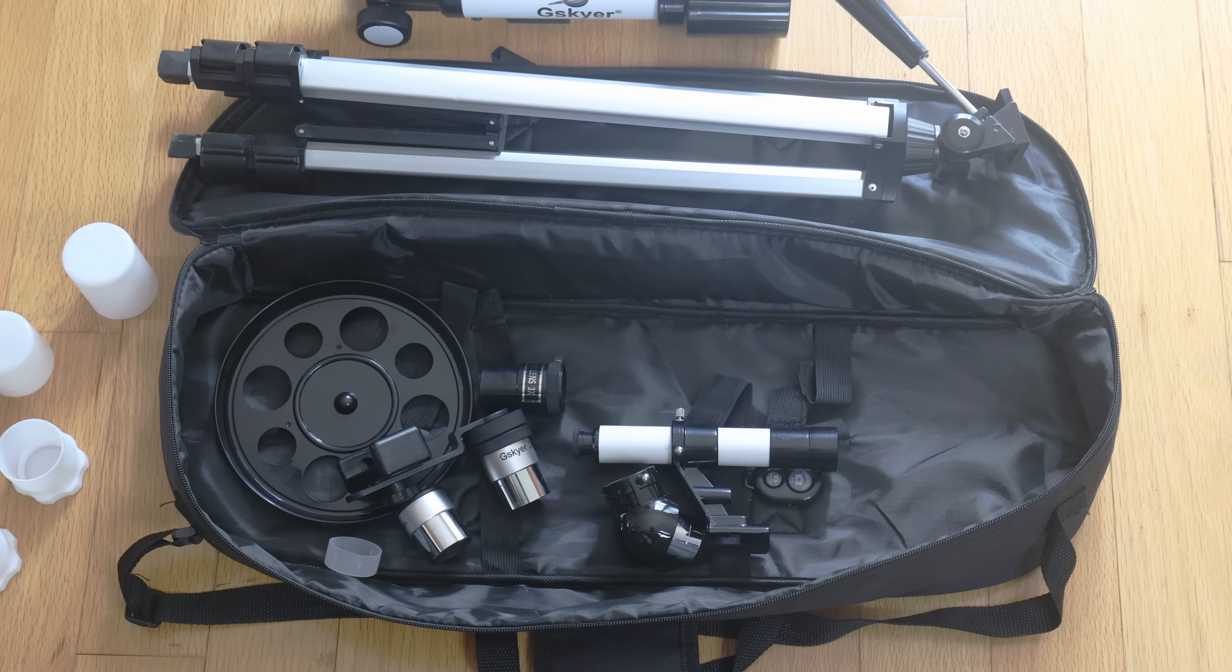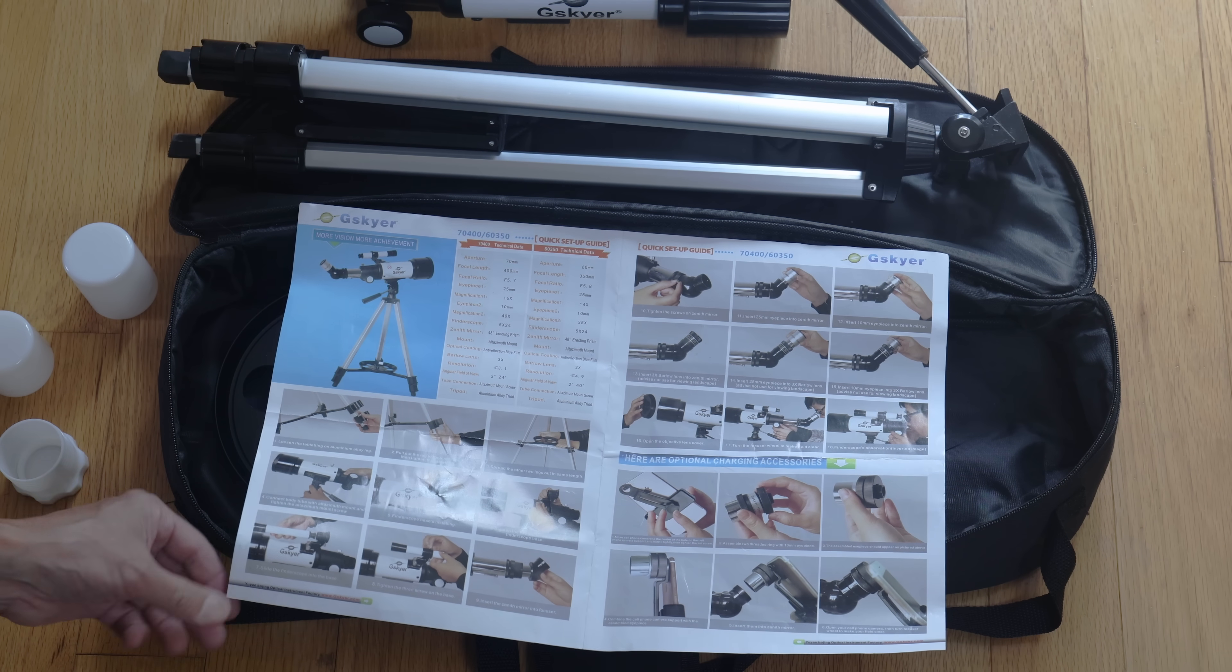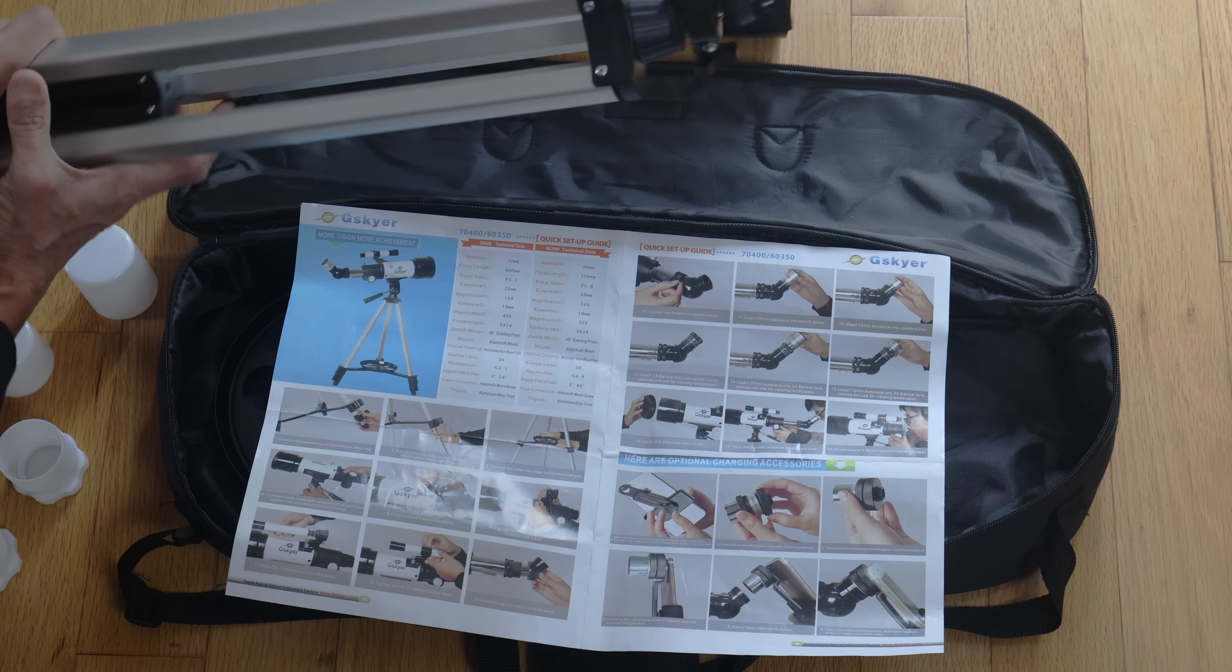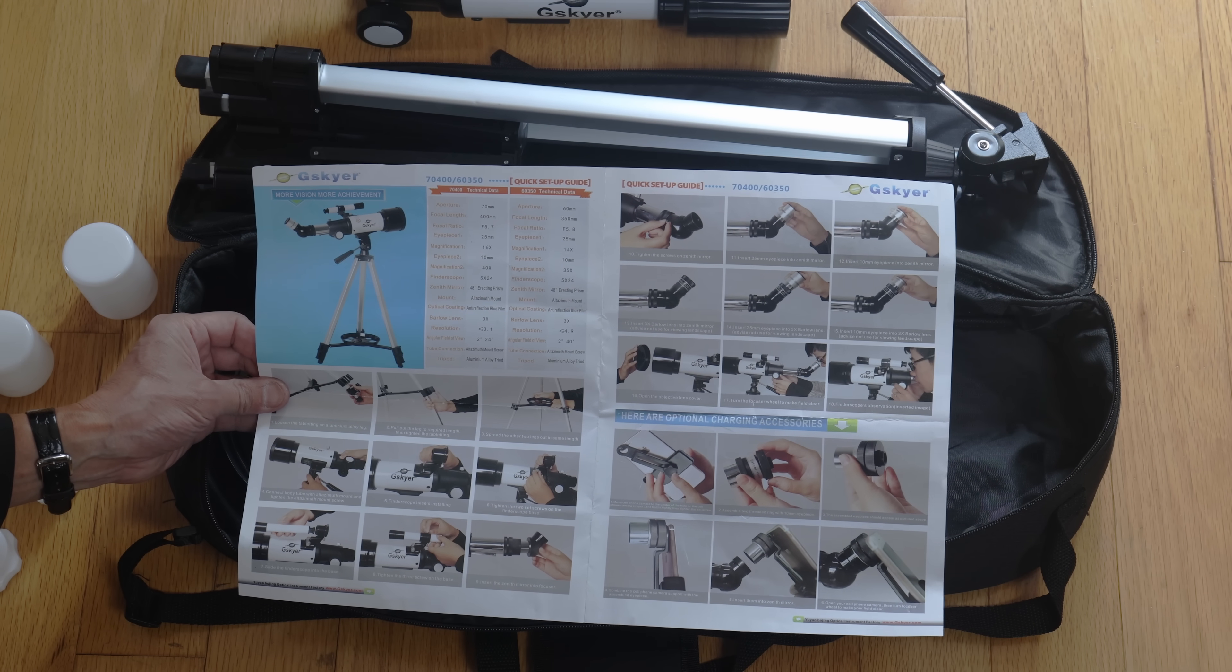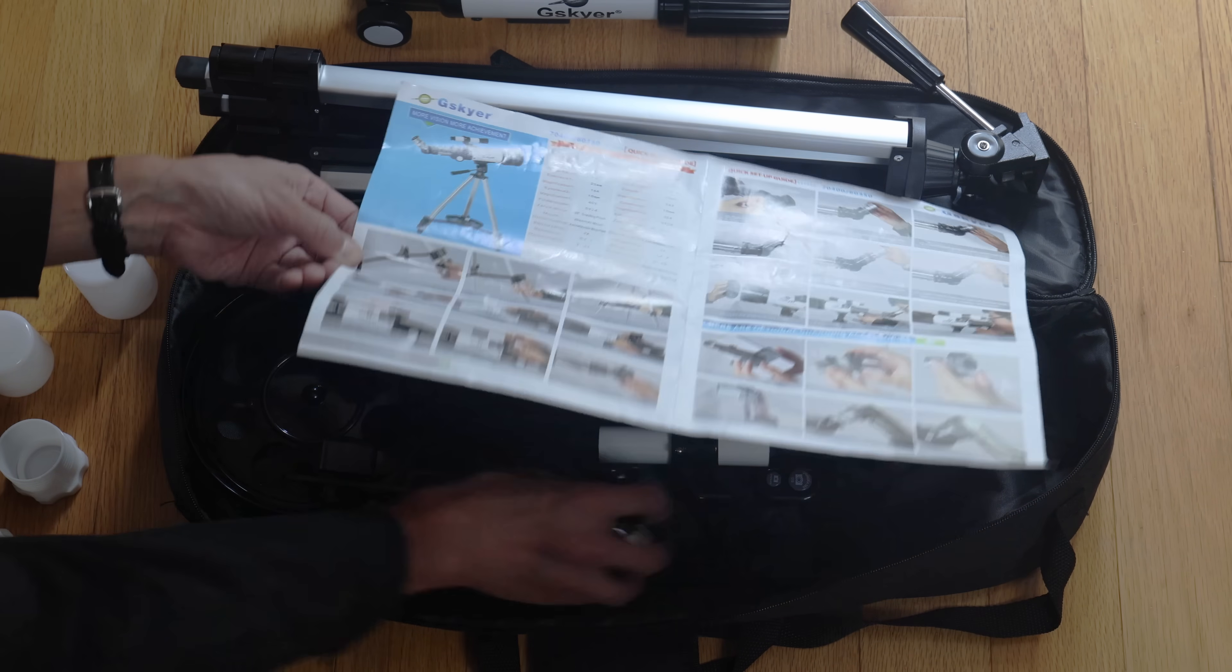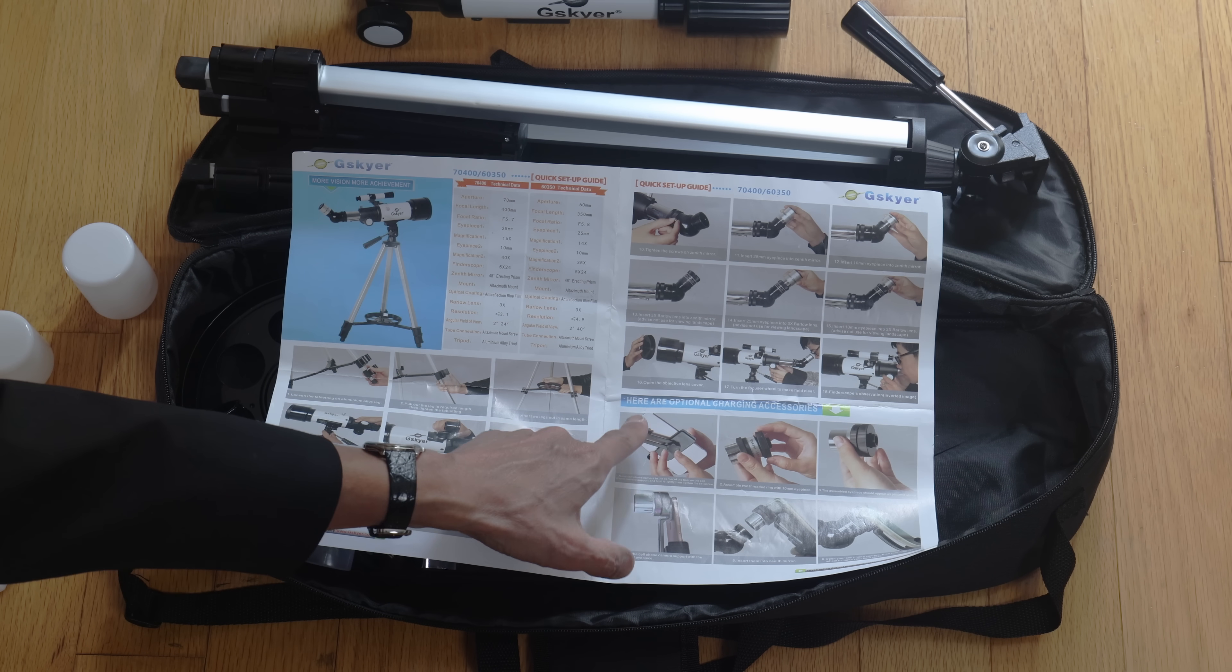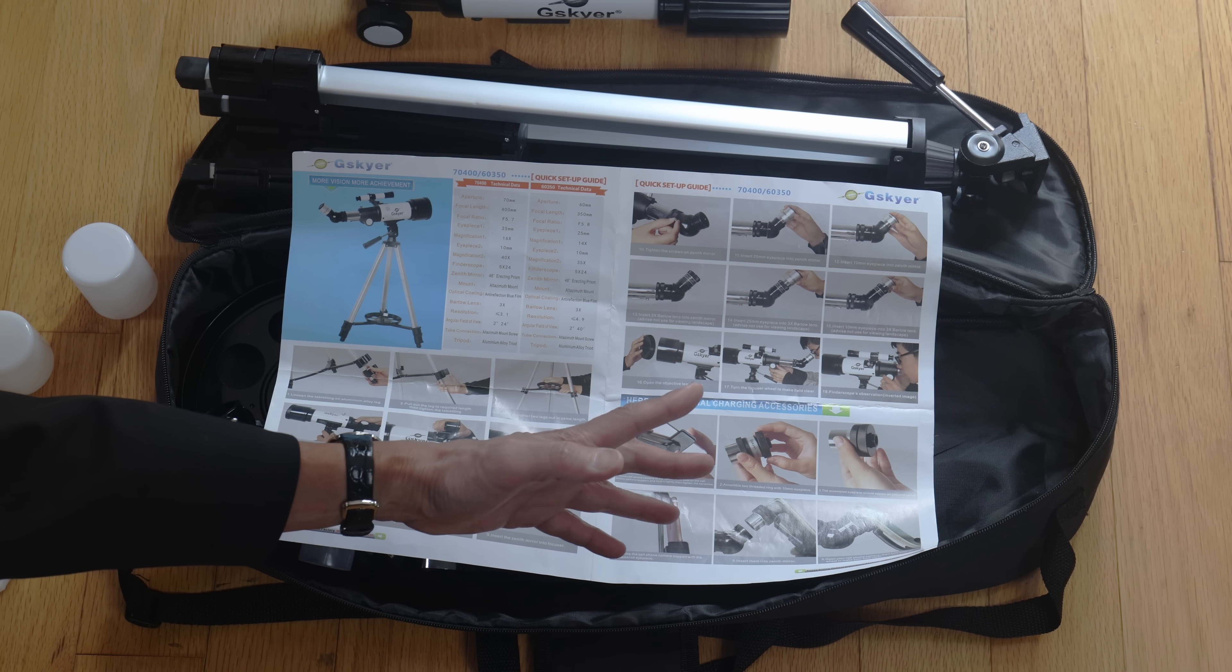Let's take a quick look at the instructions. And again, we have some indications here that perhaps whoever wrote this, they don't really understand what it is that we do. So these tripod leg locks here, these things, you can look at these instructions online. They refer to these locks as tabletting. Tabletting. I've never heard that word before. The diagonal here is referred to as a Zenith mirror. I don't know where they got that term from.